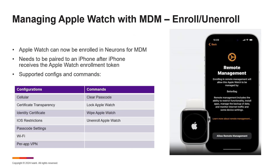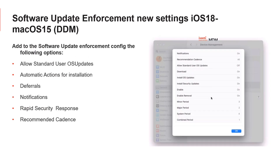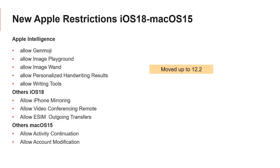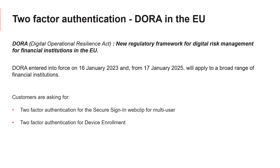On the EPMM side for Apple, Apple Watch enrollment is also available. Software update enforcement status is coming as mentioned, and the new settings will be available in the Q4 release. New restrictions were already moved up and are available in version 12.2 — you don't have to wait for 12.3. There are also new skip key items and a web clip feature for EU DORA Act compliance, adding enrollment sign-on support for multiple users on a device.